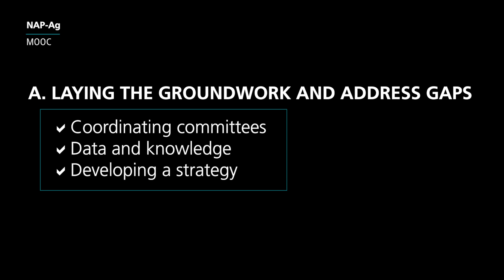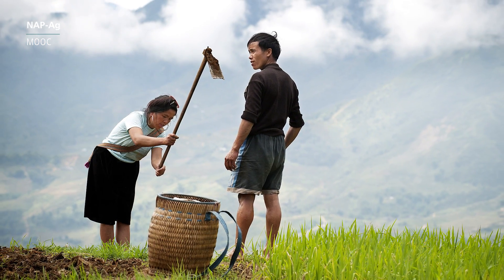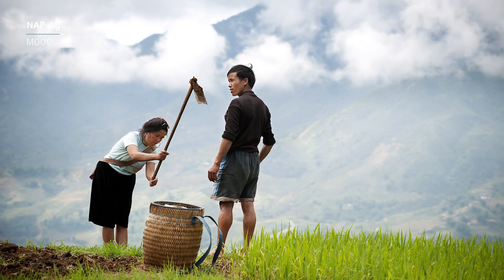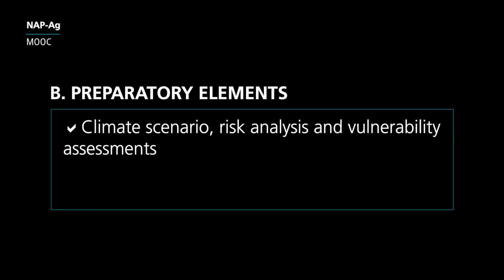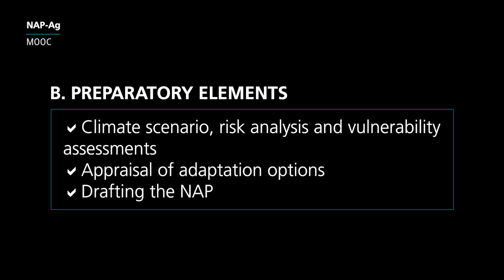After laying down the groundwork, we arrive at element B — the island of preparation for the NAP in full swing. Here, countries can involve all stakeholders in preparing a NAP that builds on and can be integrated into sectoral, subnational and national plans and strategies. To do this, they may need to delve deeper into climate change scenarios and impacts, and find out what are the current and future climate risks the country is likely to face, and what are the main climate vulnerabilities of key sectors and regions. Countries may be working on climate scenario, risk analysis and vulnerability assessments, appraisal of adaptation options, and the draft of national adaptation plans.